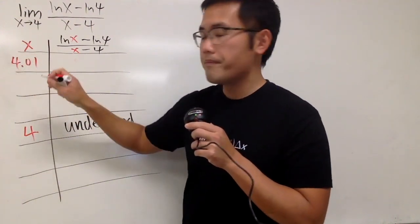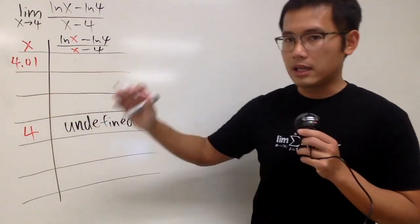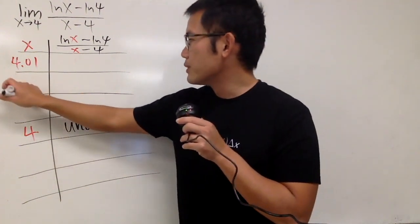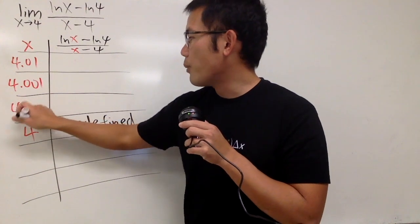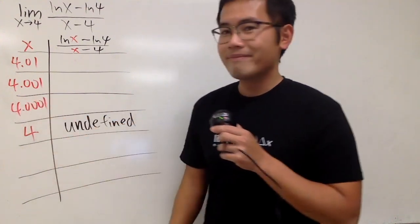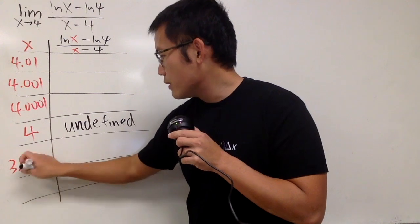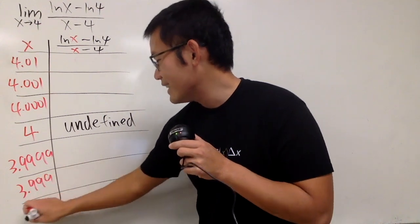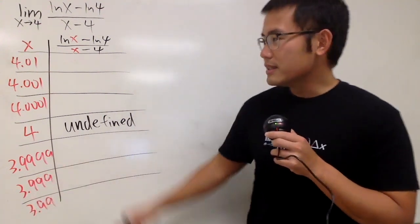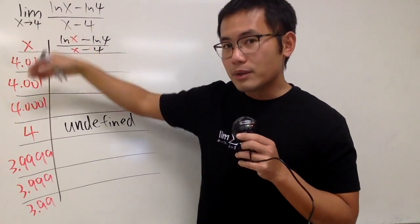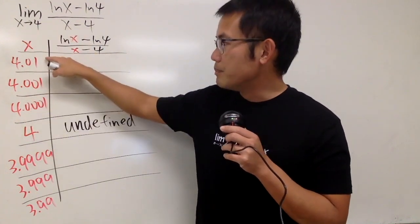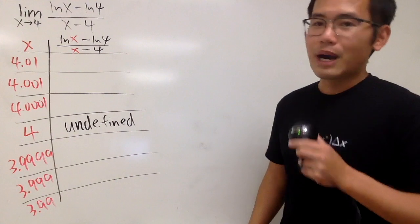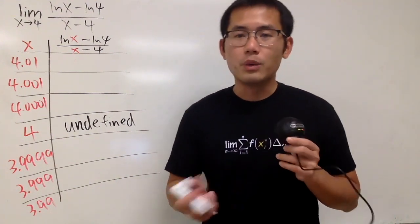Let's say we have 4.01, and then I'm going to get even closer and closer to 4, but not exactly to 4, because otherwise it will be undefined. And then I will just put down 4.001, and 4.0001. And then from the other side, I will just put down 3.9999, and then 3.999, and then 3.99. You can just use your calculator, plug in the values, and you can use a graphing calculator.